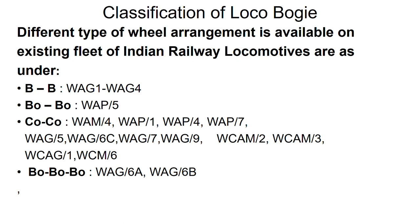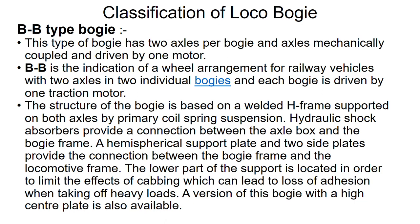Now going to the details of BB type, BoBo type, and CoCo type bogies. The BB type bogie has two axles per bogie and the axles are mechanically coupled and driven by one motor — there is a single motor. BB is the indication of wheel arrangement for railway vehicles with two axles in two individual bogies, B and B. There are two bogies and each bogie is driven by one traction motor. The structure of the bogie is based on a welded edge frame supported on both axles by primary coil spring suspension.